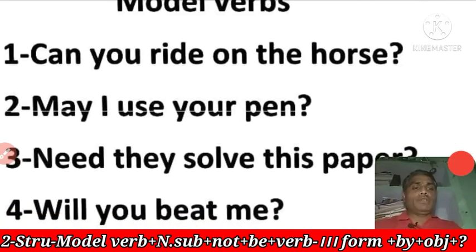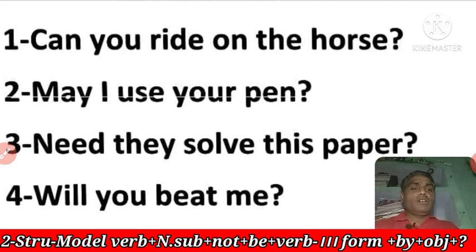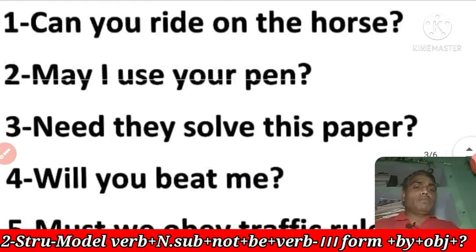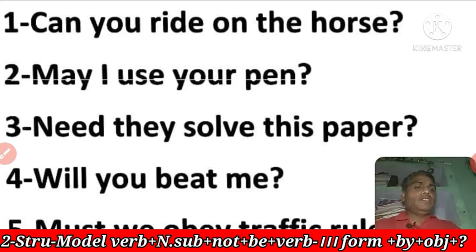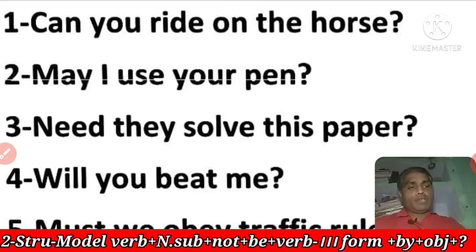Next: 'May I use your pen?' — Kya main tumhara pen prayog kar sakta hoon? The object is 'your pen,' and 'I' becomes 'me' after 'by.' The passive becomes: 'May your pen be used by me?' Next: 'Need they solve this paper?' — Kya unhe is paper ko solve karne ki avashyakta hai? The passive becomes: 'Need this paper be solved by them?' — with 'be' used after the modal verb.